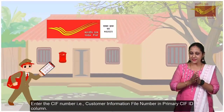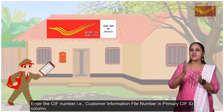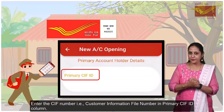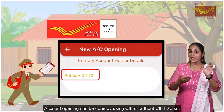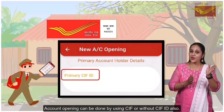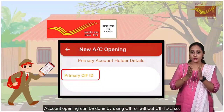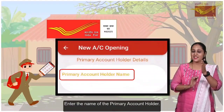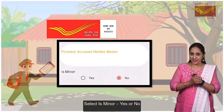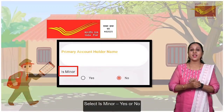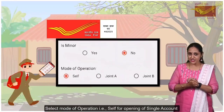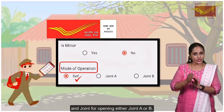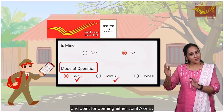Enter the KIF number, i.e. Customer Information File Number, in the Primary KIF ID column. Account opening can be done by using a KIF or without a KIF ID also. Enter the name of the Primary Account Holder. Select whether the account is minor or not. Select the mode of operation, i.e. Single for opening a single account and Joint for opening either Joint A or B.